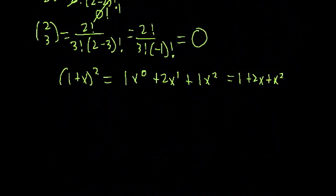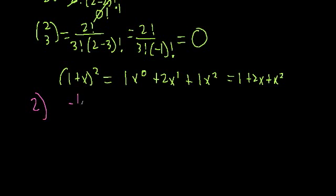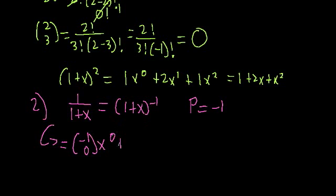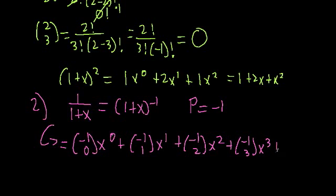Now with that in mind, let's take a look at another example where p is negative. We're going to look at 1 over 1 plus x. We can rewrite this as 1 plus x to the negative 1 power, so p is equal to negative 1. If we write this out in our series notation, we get negative 1 choose 0 times x to the 0, plus negative 1 choose 1 times x to the first, plus negative 1 choose 2 times x squared, plus negative 1 choose 3 times x cubed, and so on.